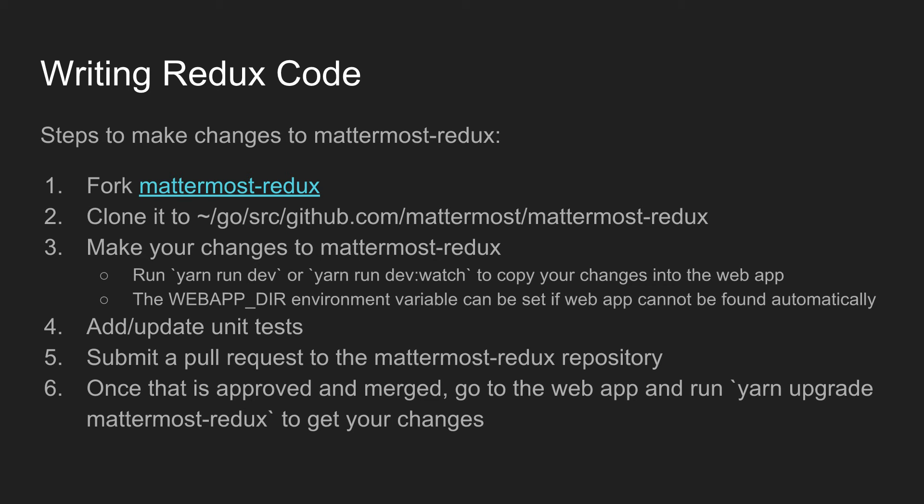If you're wanting to make changes for your own purposes or test pulling directly from the Mattermost Redux repository, you can change the web app so it pulls from your fork by modifying the package.json file and then reinstalling the Yarn dependencies. That'll work well if you're making changes for your own purposes that won't be committed back to us.